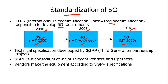These requirements are then taken by the Third Generation Partnership Project, abbreviated as 3GPP. 3GPP is an organization which is a consortium of the major telecom vendors and operators of the world — for example, Siemens and Huawei are examples of telecom vendors, and France Telecom is an example of a telecom operator.